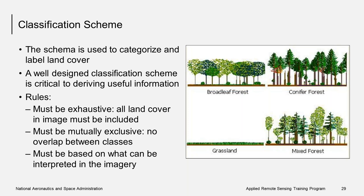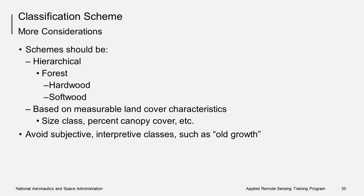There are some basic rules when developing a classification scheme. The scheme must be exhaustive — all land cover in the image must be included. The classes must be mutually exclusive, so there is no overlap between the classes. Lastly, it must be based on what can be interpreted from the imagery. For example, if you create an understory class, you will not be able to see that in the image because you can't see beneath the tree canopy using satellite imagery. You should avoid subjective, non-measurable classes such as old growth because these types of classes often do not have unique spectral characteristics.